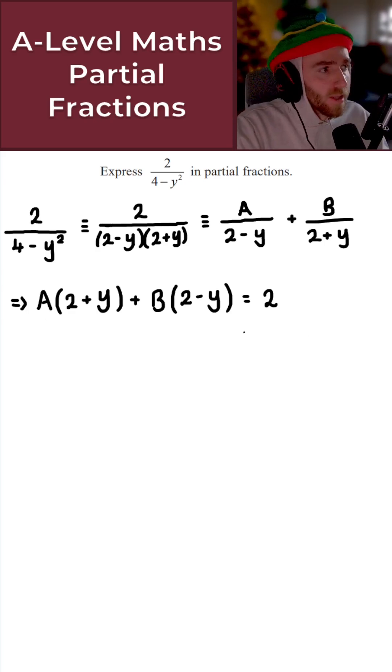So just imagine that it's underneath that. I'm being lazy, but you get what I mean. And as I said before, in that case, the numerators must be the same. So A times 2 plus y plus B times 2 minus y must be equal to 2. Once we get to this stage, we've pretty much done all of the hard work. What I now need to do is choose values of y to eliminate both A and B separately. And in that case, we can easily solve for the remaining variables.